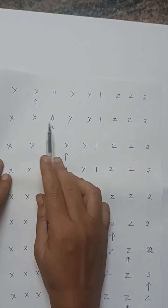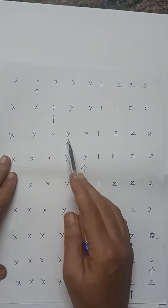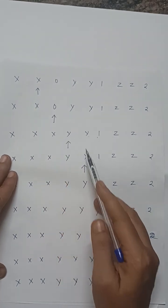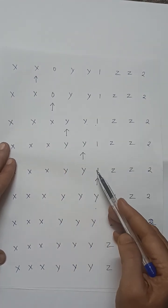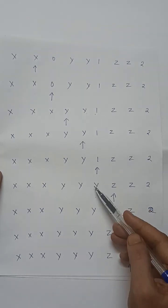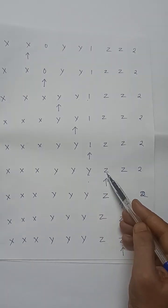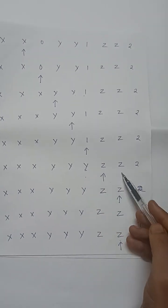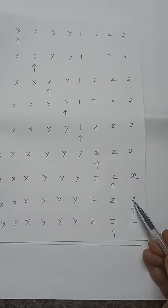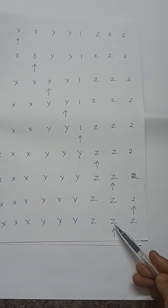For the third pass: the machine reads x, writes x, and moves right to find the third zero, replacing it with x, then moves right past y values to find the third one and replaces it with y. Then it reads z values moving right until it reaches the third two and replaces it with z.